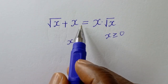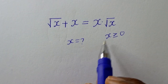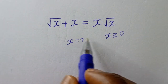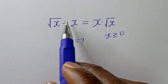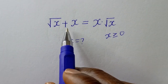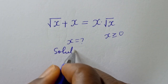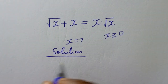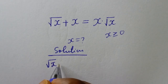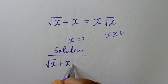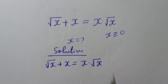The problem: square root of s plus s is equal to s multiplied by square root of x — what is the value of s? Hi everyone, welcome to my class. In this class we want to find the value of s from this given math olympiad problem. Before we proceed, please don't forget to like, share, comment, and subscribe.